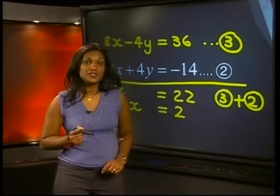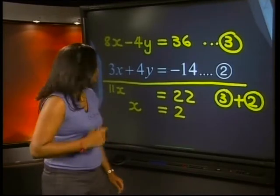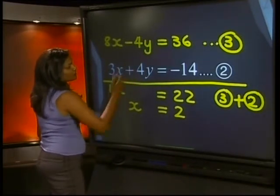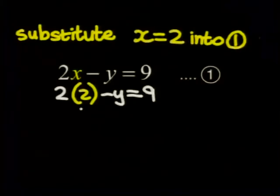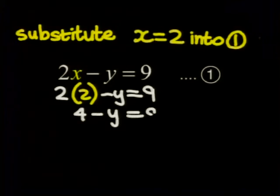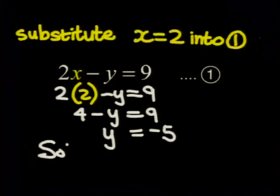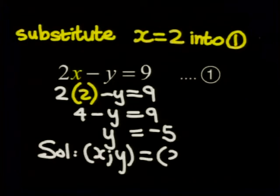Now, have we finished? No. We must still solve for y, the other variable. To do this, we substitute x equals 2 into either one of the equations. I think we should use equation 1 since it is the simpler of the two. So, our solution is the ordered pair x, y equal to (2, -5).